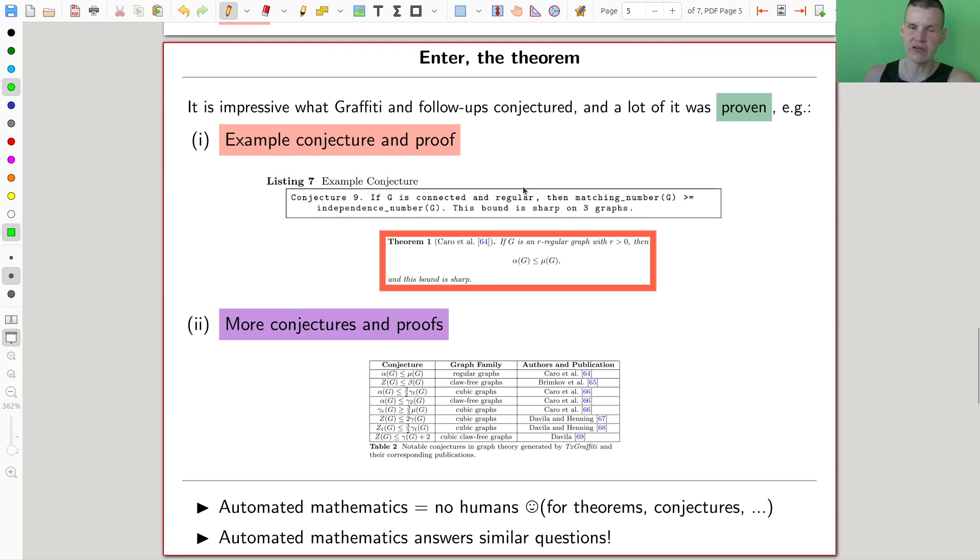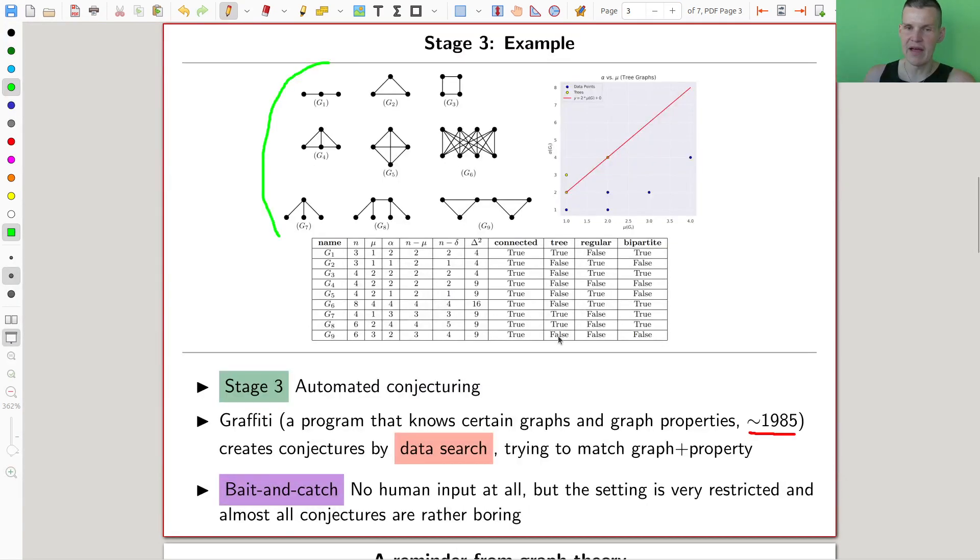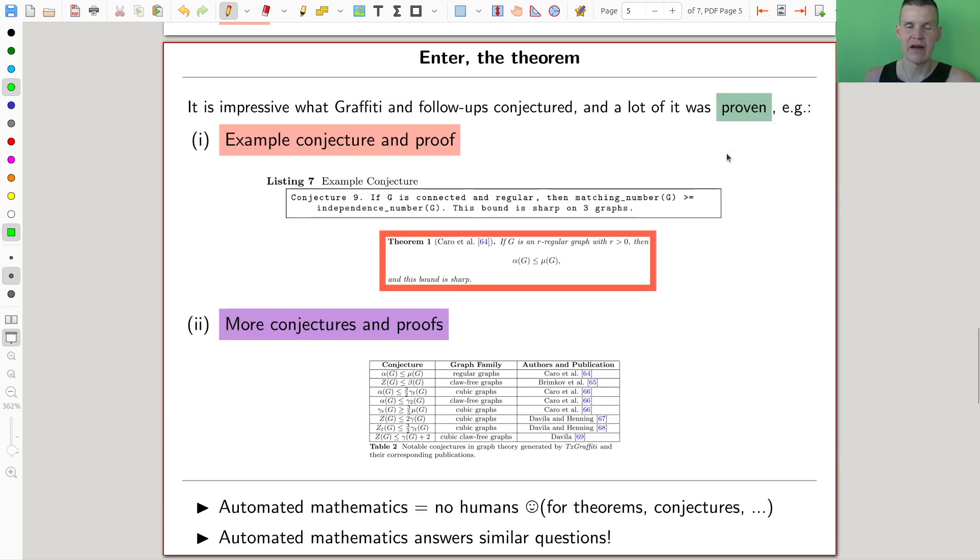If G is connected and regular—remember that we do something like we have graphs and we have conditions on graphs, and then we want to compare the various invariants—so regular just means every vertex has the same degree, which gives a stronger connection between vertices and edges than you would generally have. Anyway, if that's true, then the matching number is always bigger or equal than independence number.